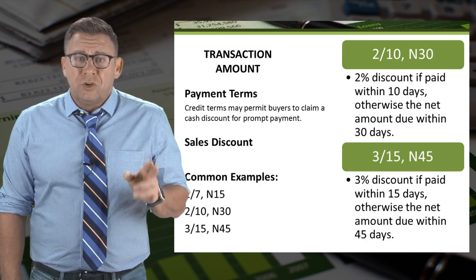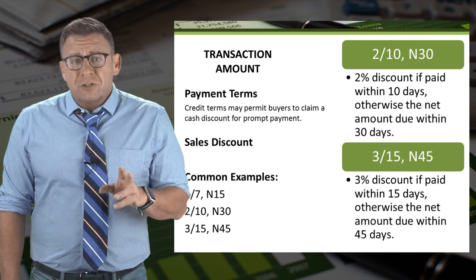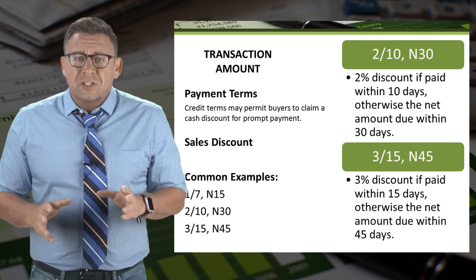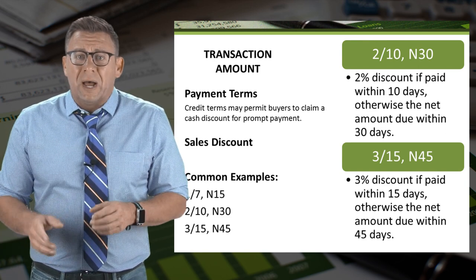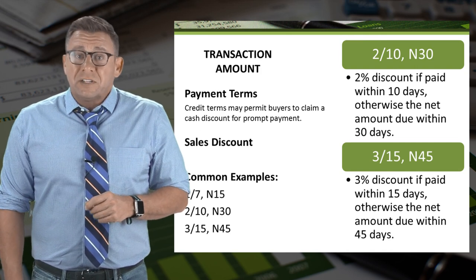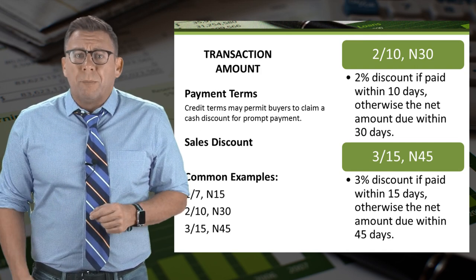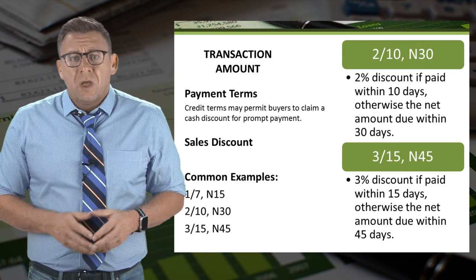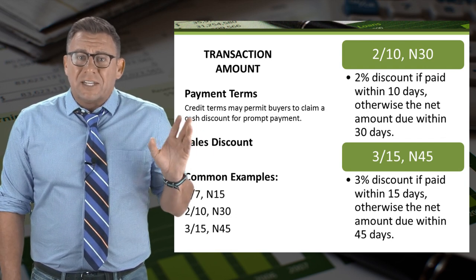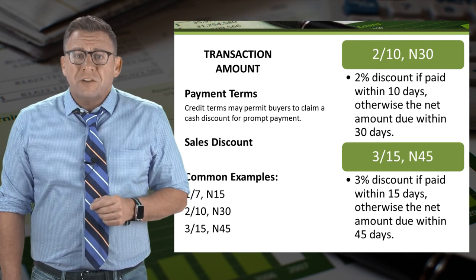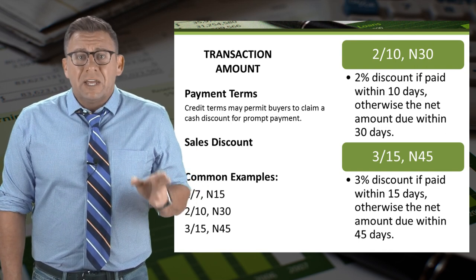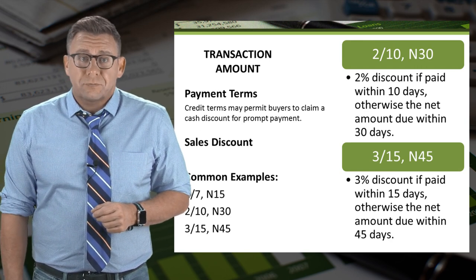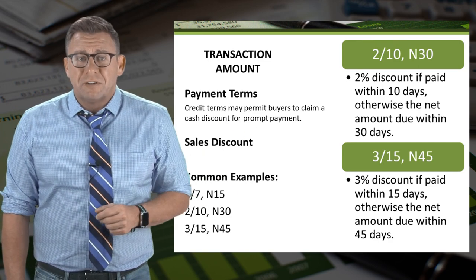In order to understand the impact of the new revenue recognition standard, we first need to understand what a sales discount is. Many firms offer sales discounts to buyers to encourage buyers to pay early. This is a very common practice and one that almost all buyers take advantage of. The terms are written as shown here. The first one reads as 2/10 net 30, meaning the buyer can take a 2% discount if the invoice is paid within 10 days; otherwise the balance is due in 30 days. You can see on the slide some other common types of discounts.